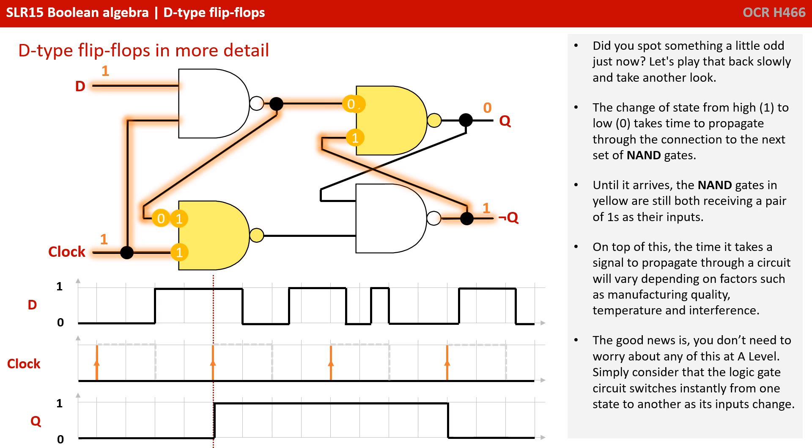On top of this, the time it takes a signal to propagate through a circuit will vary depending on factors such as manufacturing quality, temperature and outside interference. The good news is you don't need to worry about any of this at A-level. Simply consider that the logic gate's circuit switches instantly from one state to another as its inputs change.